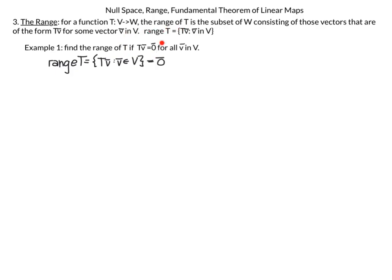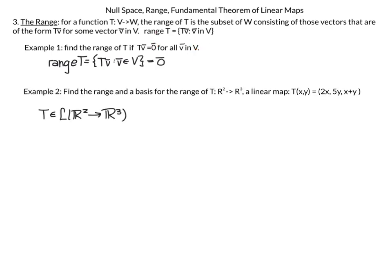This transformation maps an entire vector space V down to a single point — like a little black hole, it can collapse the entire three-dimensional space to a single point. Now find the range and a basis for the transformation T from R2 to R3, where T maps (x, y) to (2x, 5y, x+y).